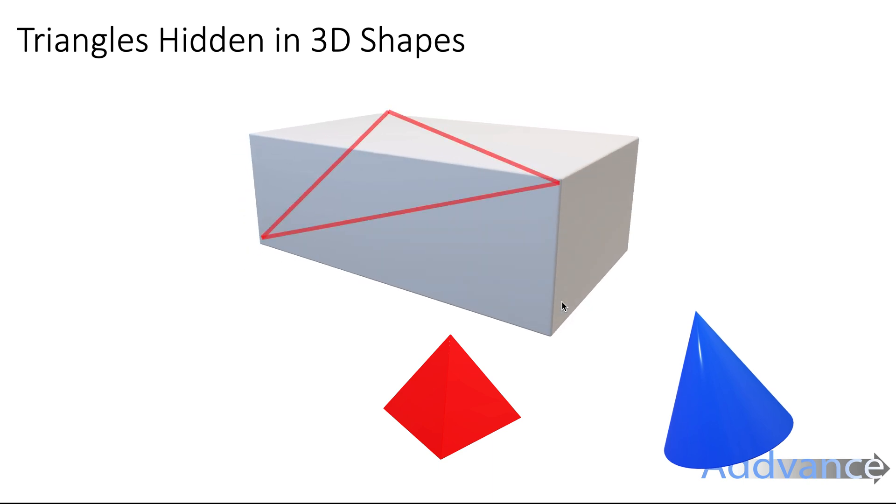And then we've also got this triangle here, which is not a right-angled triangle. So you wouldn't use Pythagoras or Sohcahtoa with that one. You might use sine or cosine rule with that triangle, and that would be quite a tricky question.